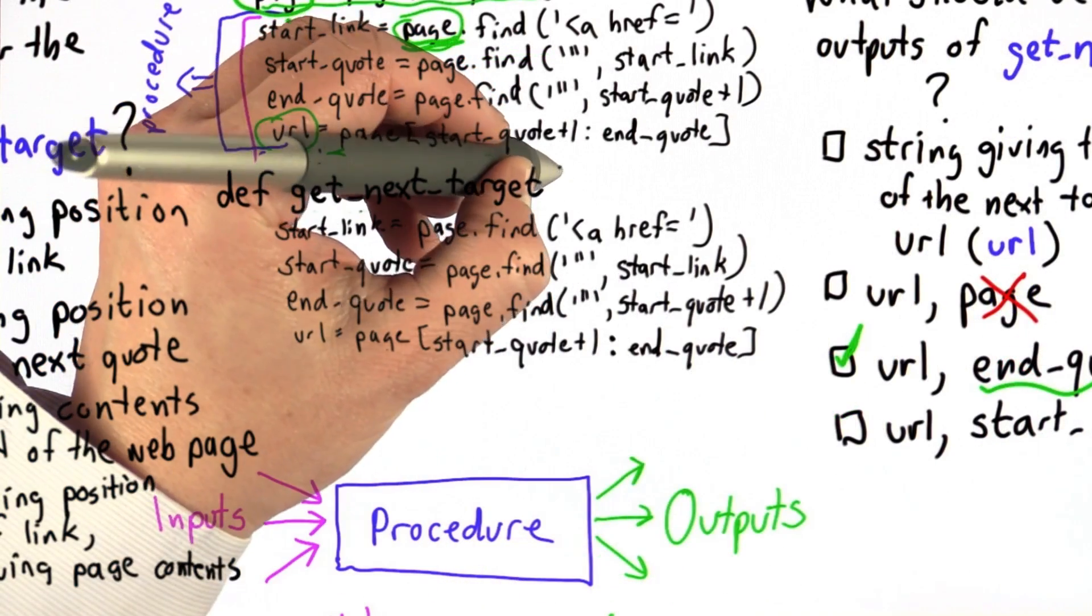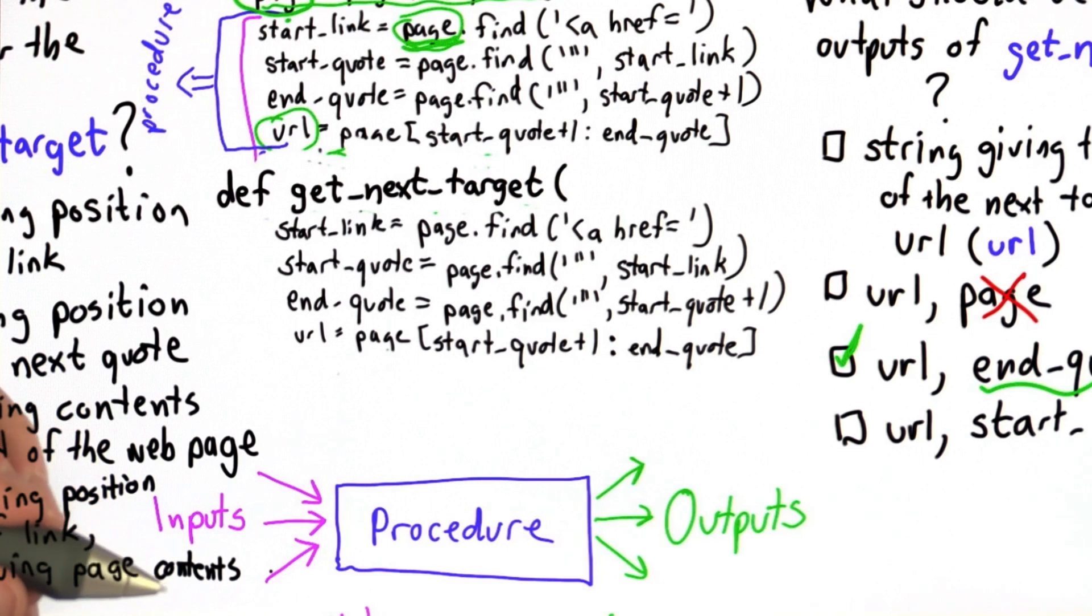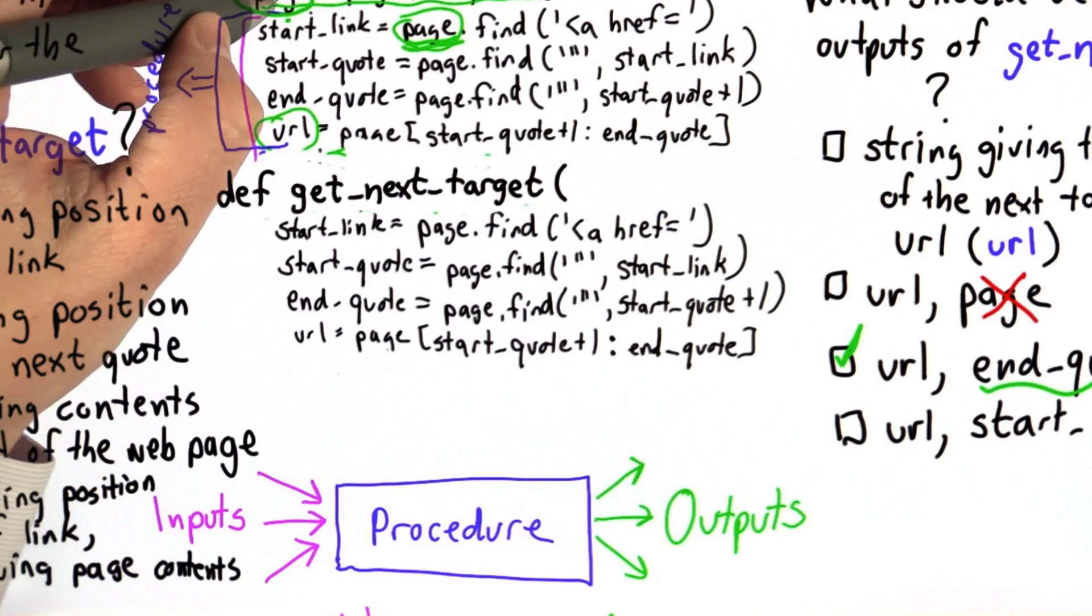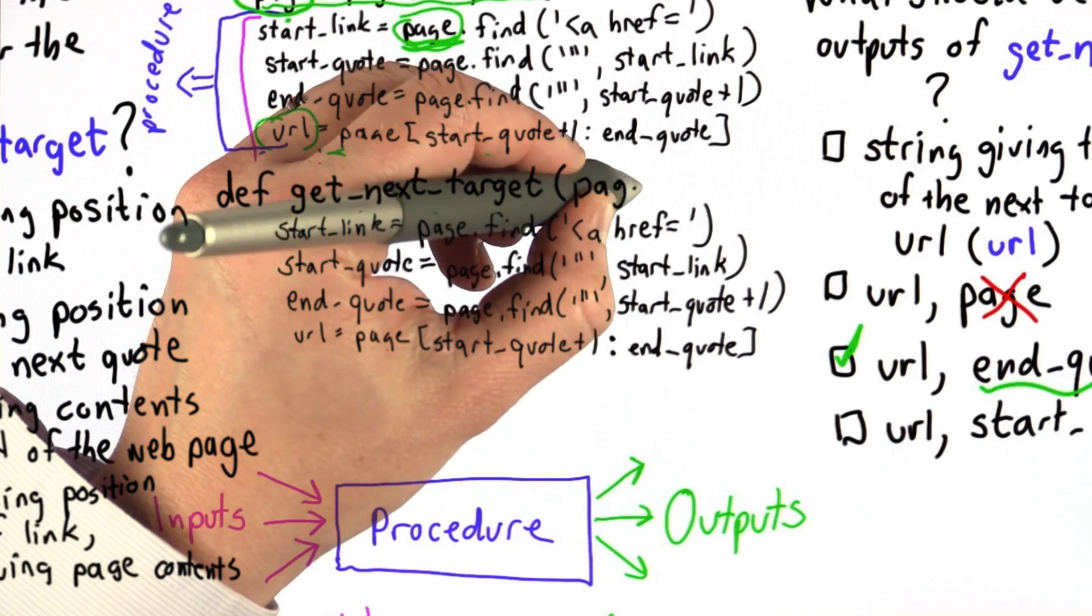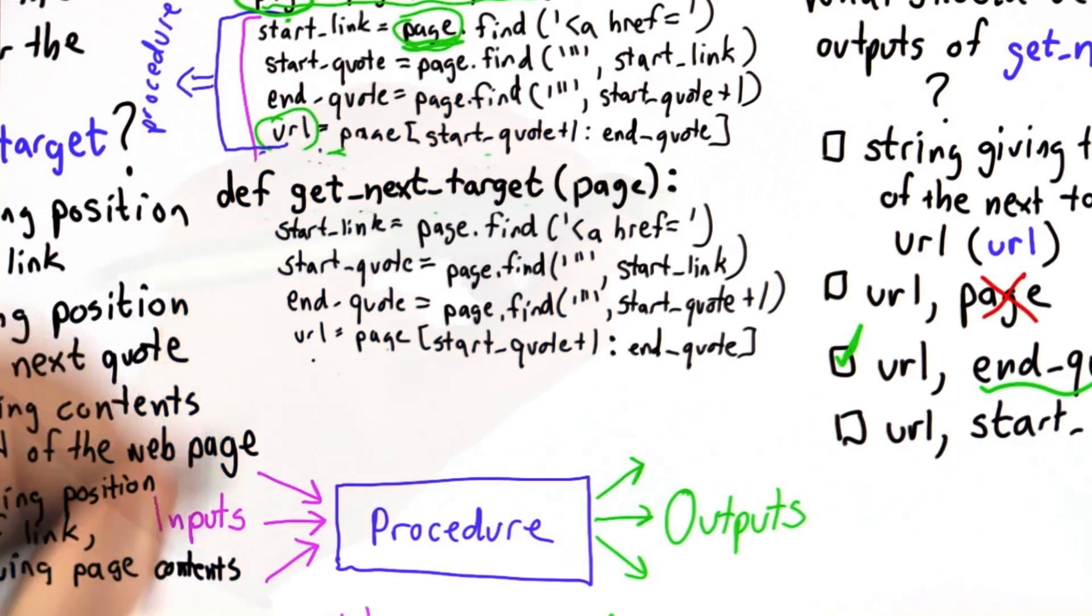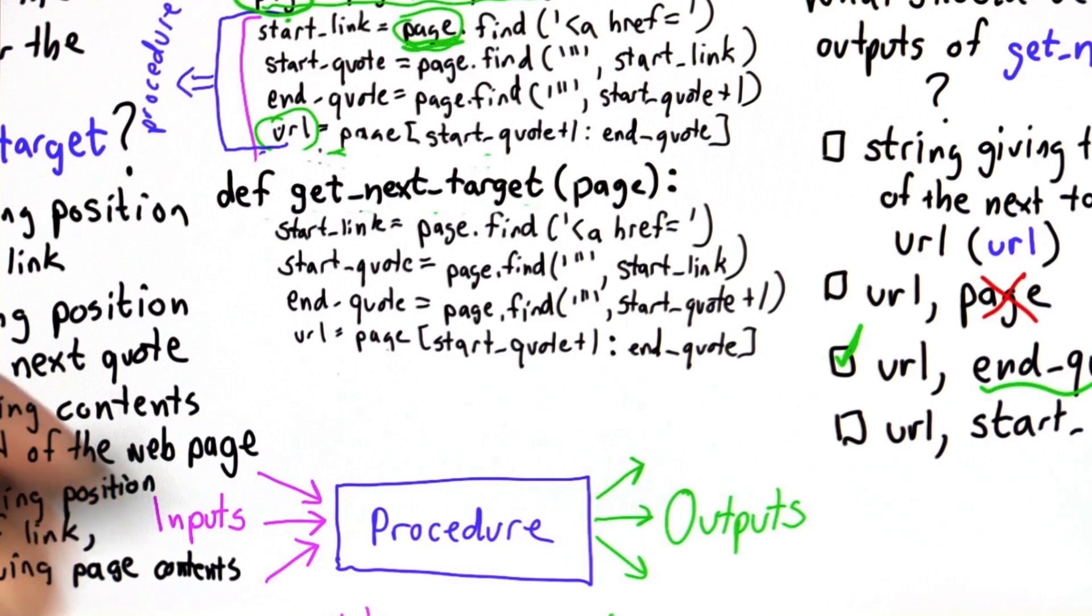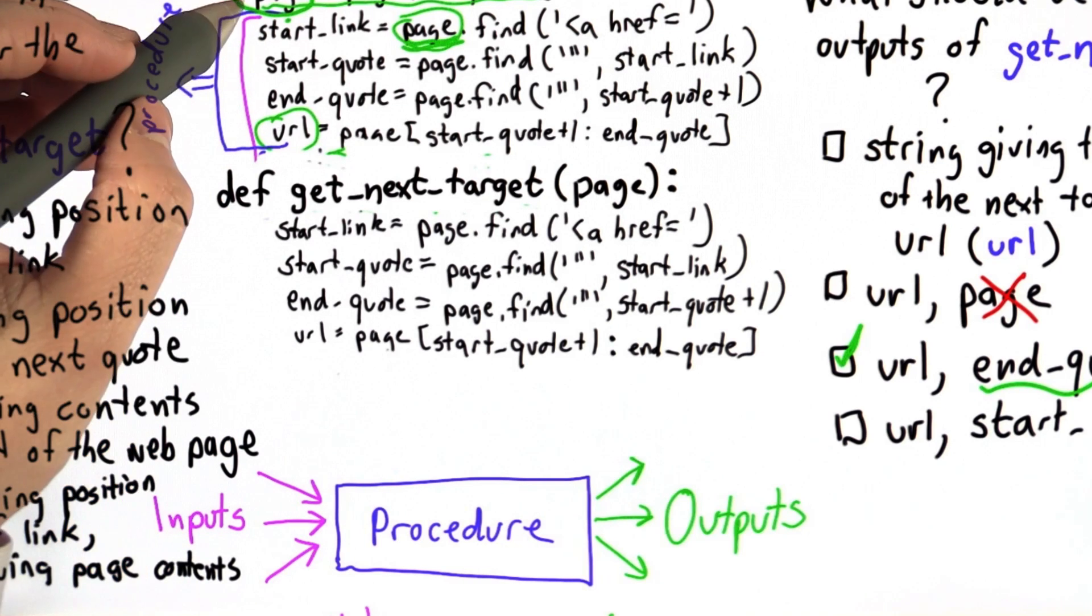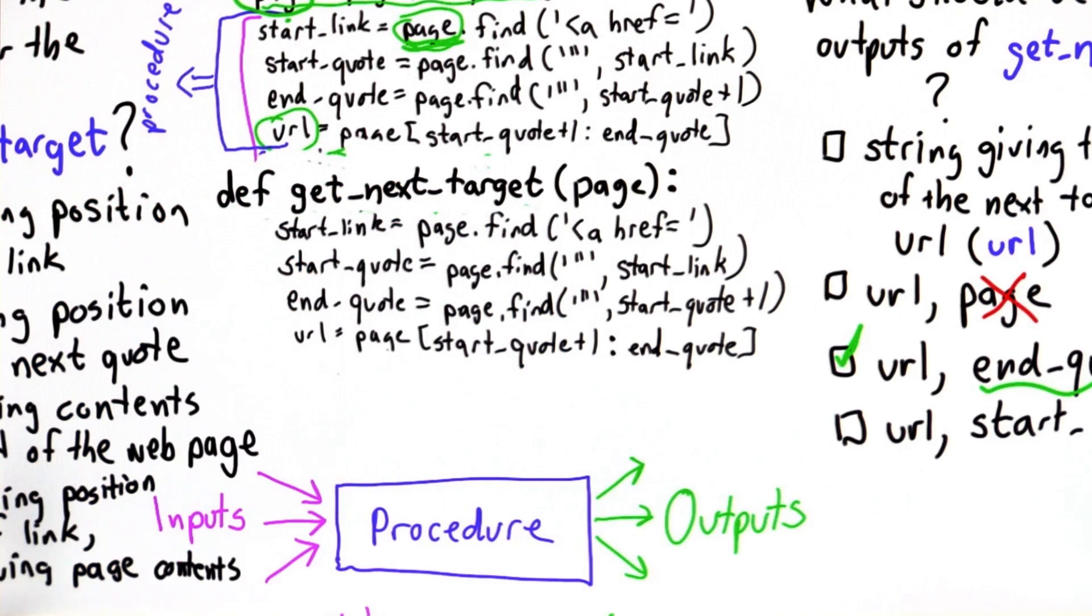So now we need our parameters. The parameters are the inputs to the procedure, and we decided what the input should be is the web contents. That's a string giving the contents of the web page, and that's what we had in the variable page. So we can call that page again here. That's what we're passing in as our input. And now we have the body of the procedure. The code is exactly the same as the code we have before, but this time instead of page being whatever it was here, page is whatever we pass in as the input of the procedure.